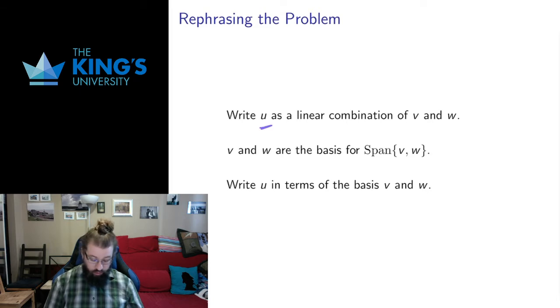So it was write u as some linear combination of v and w. But anytime I have a linear combination what I really have is a span. Linear combinations come from a span, and if I'm trying to write something as a linear combination of v and w, I'm trying to write it as a member of this span. And assuming that v and w are linearly independent, I can treat v and w as a basis for this span.